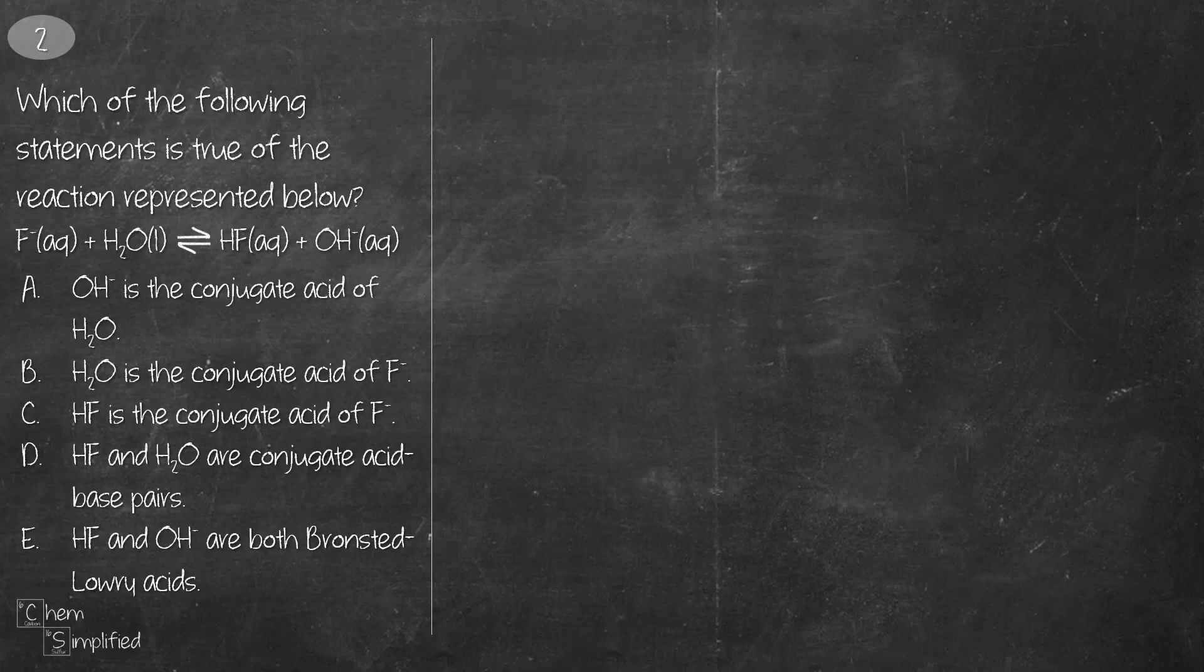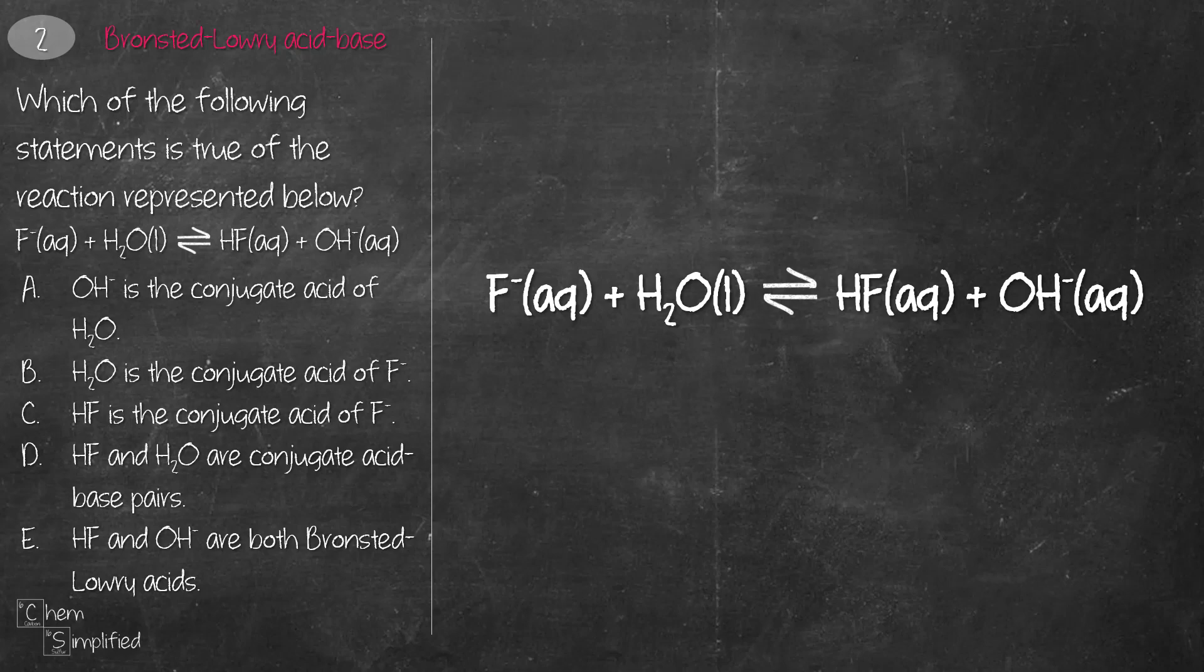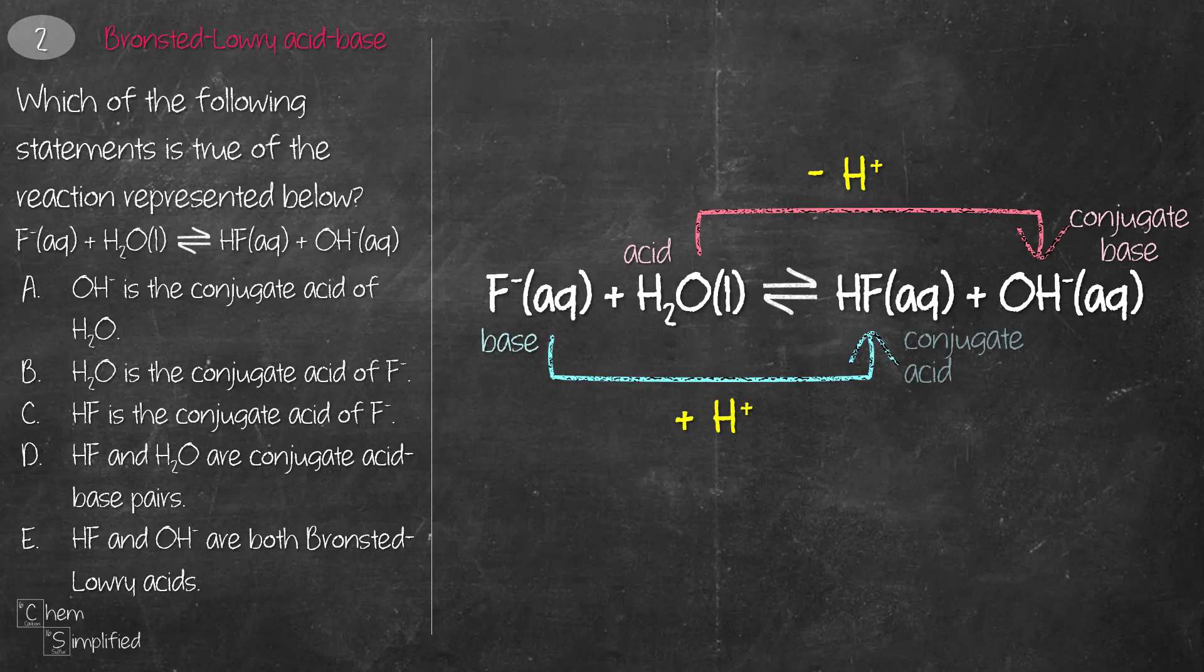This next question involves Bronsted-Lowry acid and base theory. This is the equation that is given. Before we start answering the questions, let's figure out what's the role for each of these components in the equation. H2O has to donate a proton in order to become OH-, and because H2O donates a proton, that makes H2O an acid, and therefore OH- to be the conjugate base. And when F- becomes HF, it actually accepted a proton. And when something accepts a proton, it's a Bronsted-Lowry base, making HF the conjugate acid. And therefore, based on the options that's given, C is the most accurate statement whereby HF is the conjugate acid of F-.